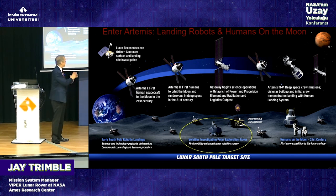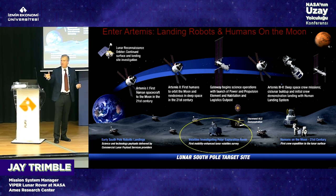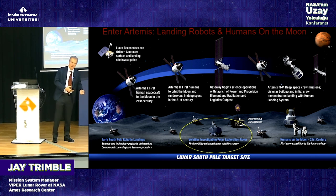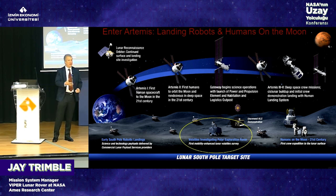Artemis uses the Space Launch System — a Saturn V class rocket — with the new Orion capsule, which is larger and more capable than the Apollo command module. The Orion service module is European-built. The lunar gateway — an outpost in lunar orbit for science and logistics — will be built by many nations, similar to the International Space Station, which flies astronauts from many countries including Turkey.